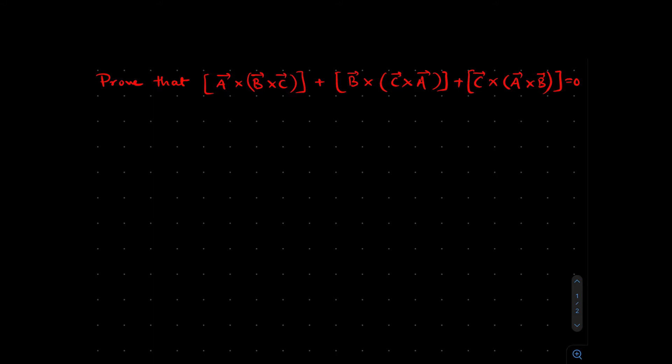So what's the identity? The identity goes like this: A cross (B cross C) can be written as (A dot C) times B minus (A dot B) times C.